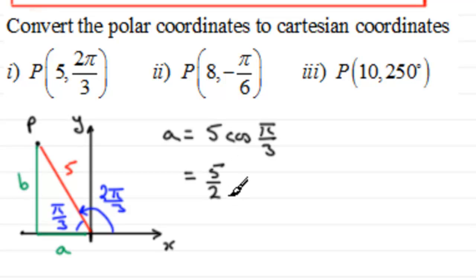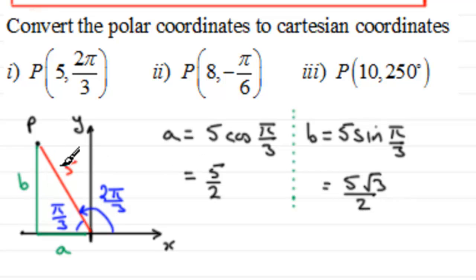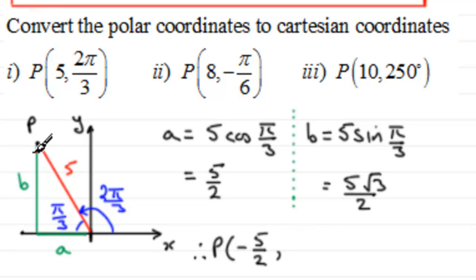For length b, b equals 5 times the sine of π/3 radians. The sine of π/3 is √3/2, so that gives you 5√3/2. I'm always working off the acute angle so these lengths are always positive. The Cartesian coordinates of P are therefore negative a, giving −5/2 for the x-coordinate, and positive b, giving 5√3/2 for the y-coordinate.